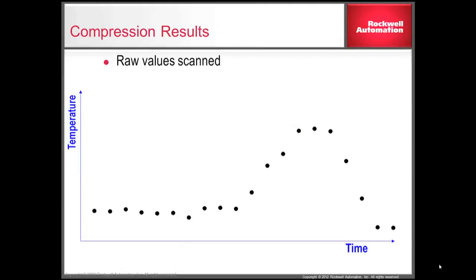Taking a look at what our raw data would look like after exception and compression has completed, we first take a look at what our raw values coming into the system would have been. All the points that have become outlined are the points that would have been removed after the exception results. And finally, all the new points that are outlined are the points that would have been removed after the compression results. In the end, we see that we have a trend that very closely maps our original raw data.